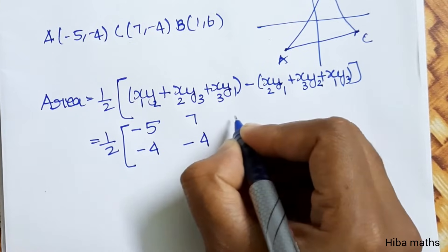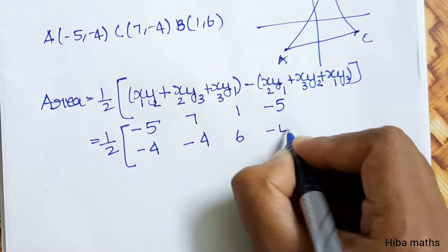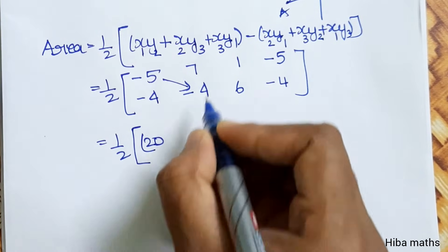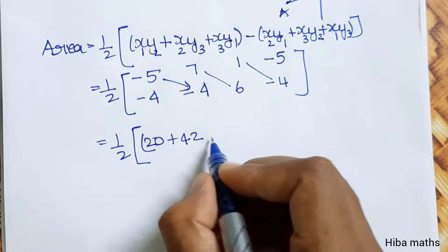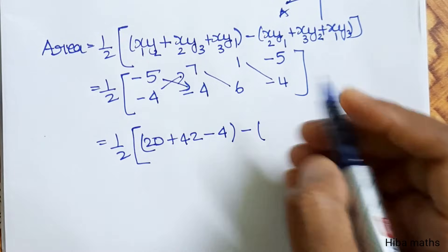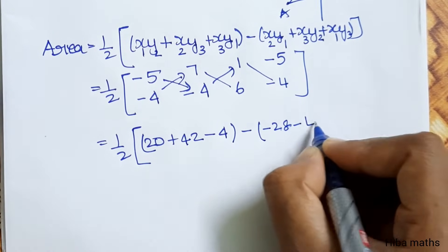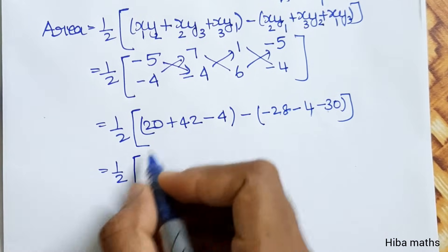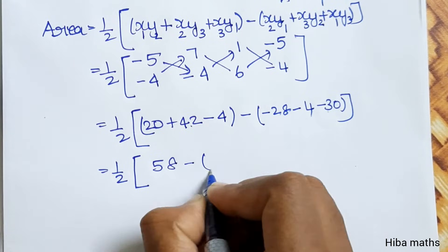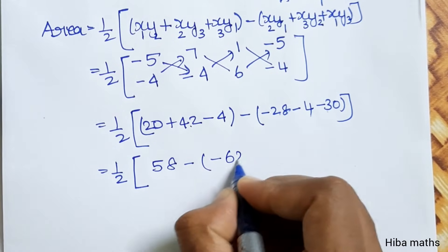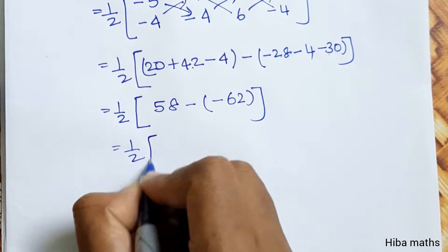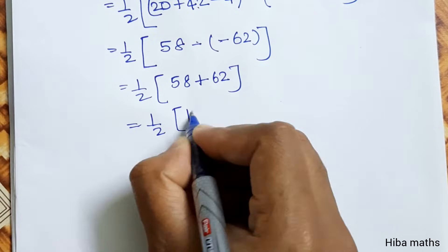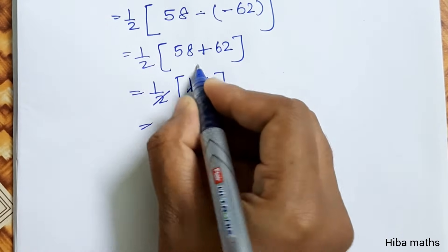Now applying the area formula using vertices A, B, C and cycling back to A. We substitute the coordinate values for A, B, C and C, A in the area formula, working through the calculation step by step.